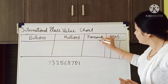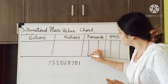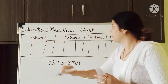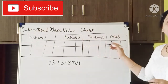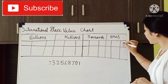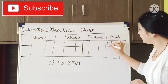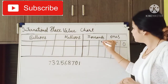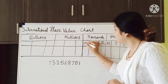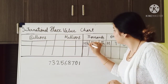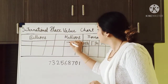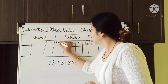Ones into 3 parts, thousands also into 3, millions into 3, and billions into 3. These are the periods. Now we divide these periods into places. Ones will be divided into 1, tens, and hundreds. Thousands will be divided into 1,000, 10,000, and 100,000. Similarly, millions into 1,000,000, 10,000,000, and 100,000,000.